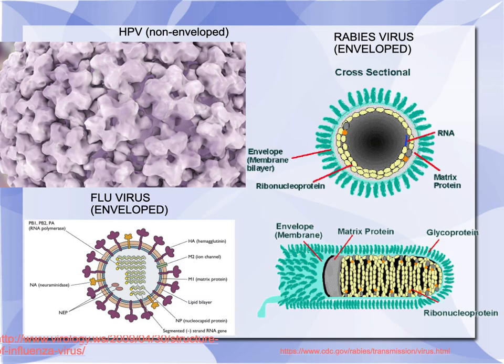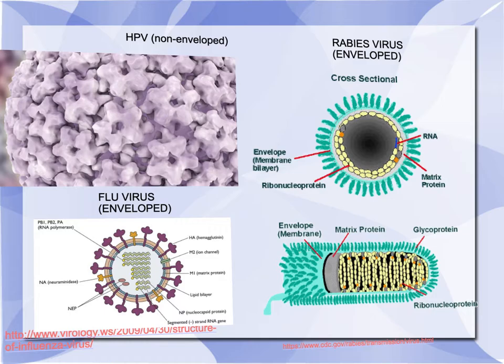HPV — here's a close-up view in the upper left, non-enveloped, and you can see the various capsid proteins that form together. Bottom left is the flu virus, which is enveloped, and you can see the spikes coming out — those are HA and N for hemagglutinin and neuraminidase. And on the right-hand side you have rabies, which is an enveloped virus, and it shows a helical structure.